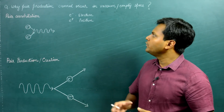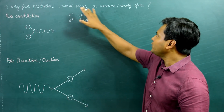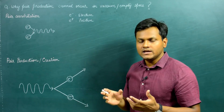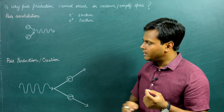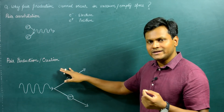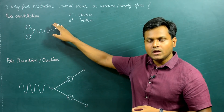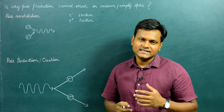Before I talk about why pair production cannot happen in vacuum or free space, let's talk a little bit about pair production — what it is — and what pair annihilation is. Every particle in the universe has a corresponding antiparticle.